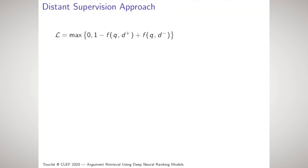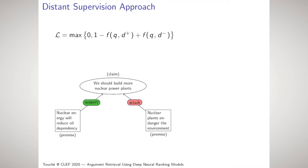Neural ranking models are commonly trained with a pairwise loss function such that, given a query, a relevant document and a non-relevant document, the relevant document is ranked higher. Since relevance-judged training data for argument ranking are hard to come by, we employ a distant supervision approach using the arguments in the args.me dataset to derive surrogate binary relevance data.